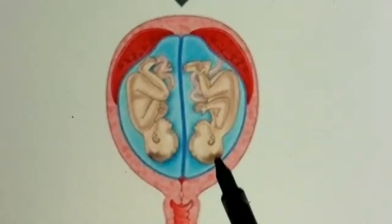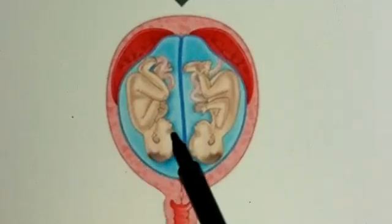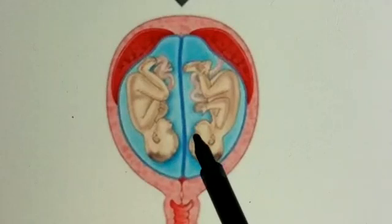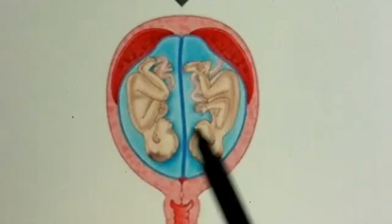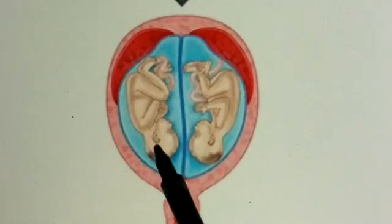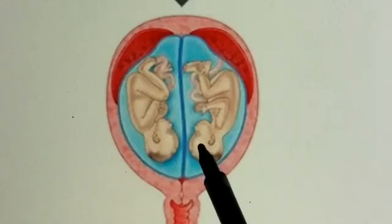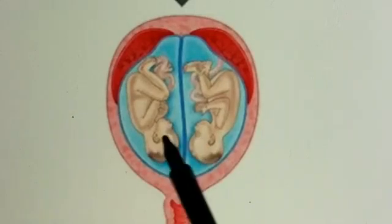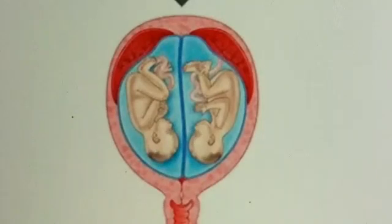These two babies may be the same gender or different genders. Genetically they will be totally different because two different embryos formed with two different genetic combinations. So dizygotic twins will have different genetic combinations, unlike monozygotic twins.